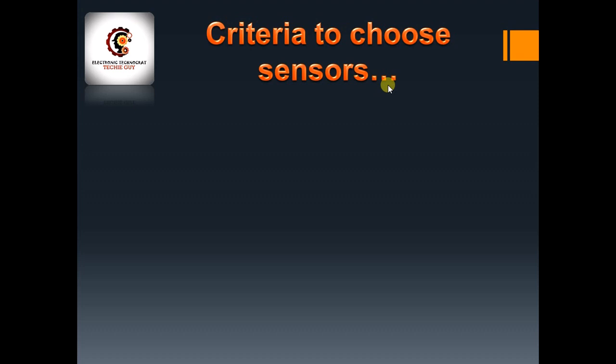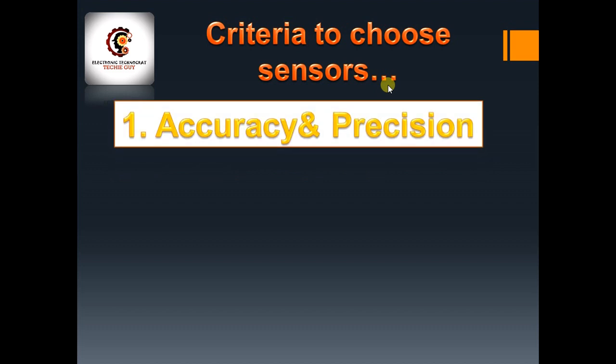When talking about sensors, the very first criteria that comes to mind is accuracy and precision. These two terms do not mean the same thing. They are often related, and go hand in hand, but they are different. Accuracy refers to how close the sensor reading is to the true value, while precision refers to the ability of the sensor to detect small changes.